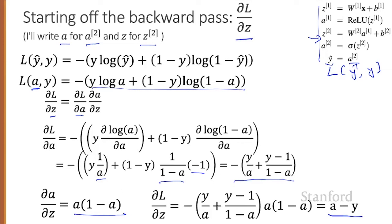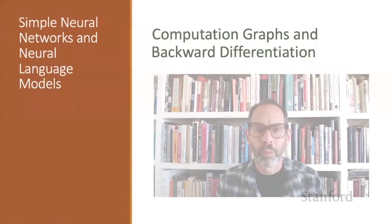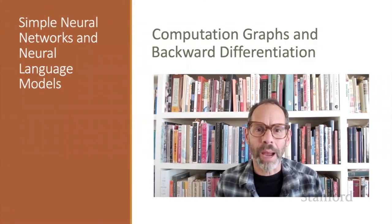So we've seen a couple of pieces of the backward pass for a simple two-layer neural net. In summary, for training a neural network we need the derivative of the loss with respect to weights in early layers, but the loss is computed only at the end. The solution is backward differentiation: given a computation graph and the derivatives of all functions in it, we can automatically compute the derivative of the loss with respect to early weights. We've seen the important back propagation algorithm, the idea of computation graphs, and backward differentiation.